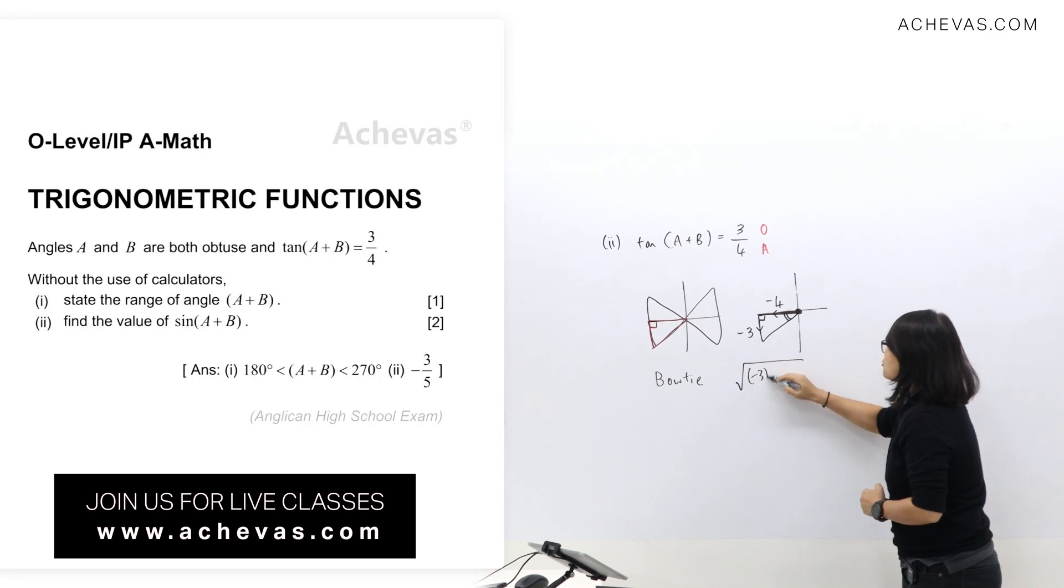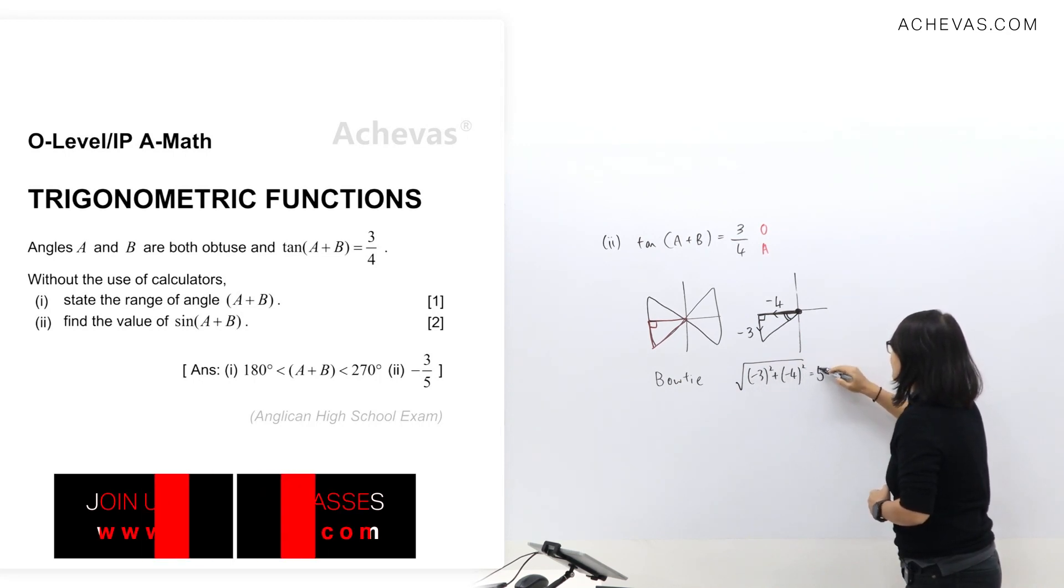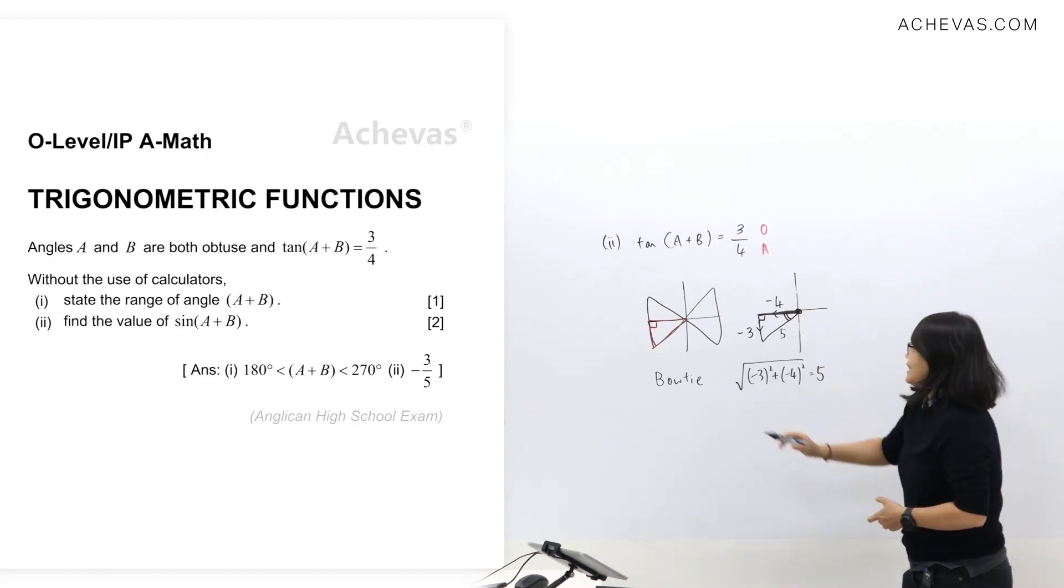Now let's find out what this side is by doing Pythagoras. I'm going to do square root of negative 3 squared plus negative 4 squared. I'll get a value at 5. Let me write down 5 here.